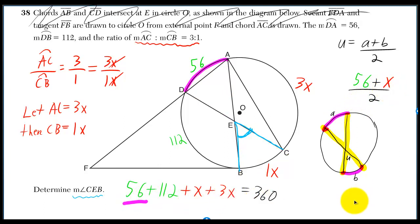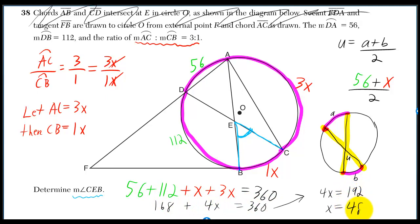We can solve for X with this equation. The 56, the 112, the X, and the 3X add up to 360 degrees. So 168 plus 4X is equal to 360. So 4X is equal to 192, so X is 48. So the average of 56 and X is the average of 56 and 48, which is 52.